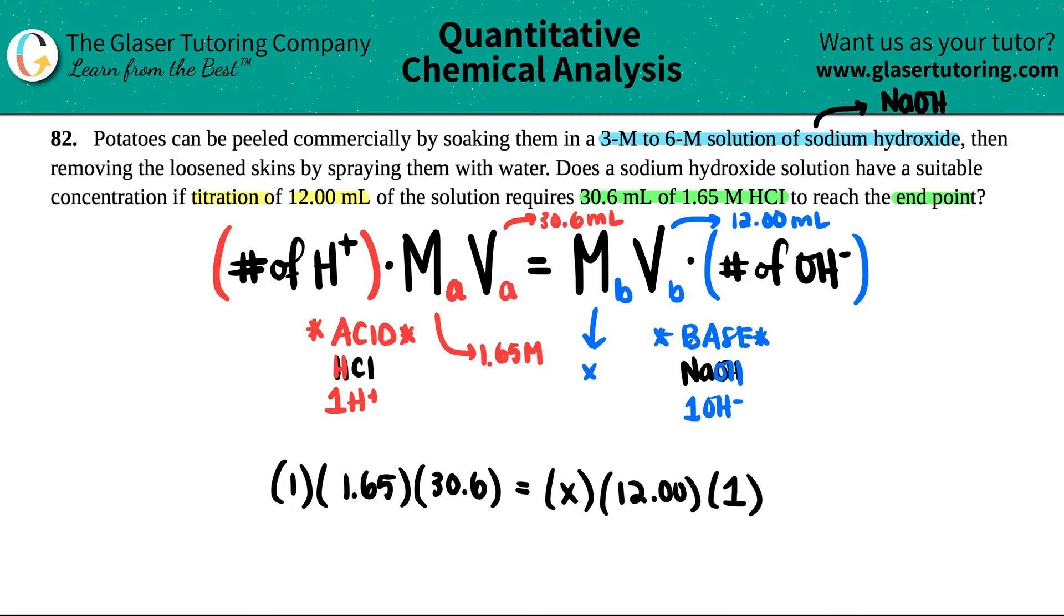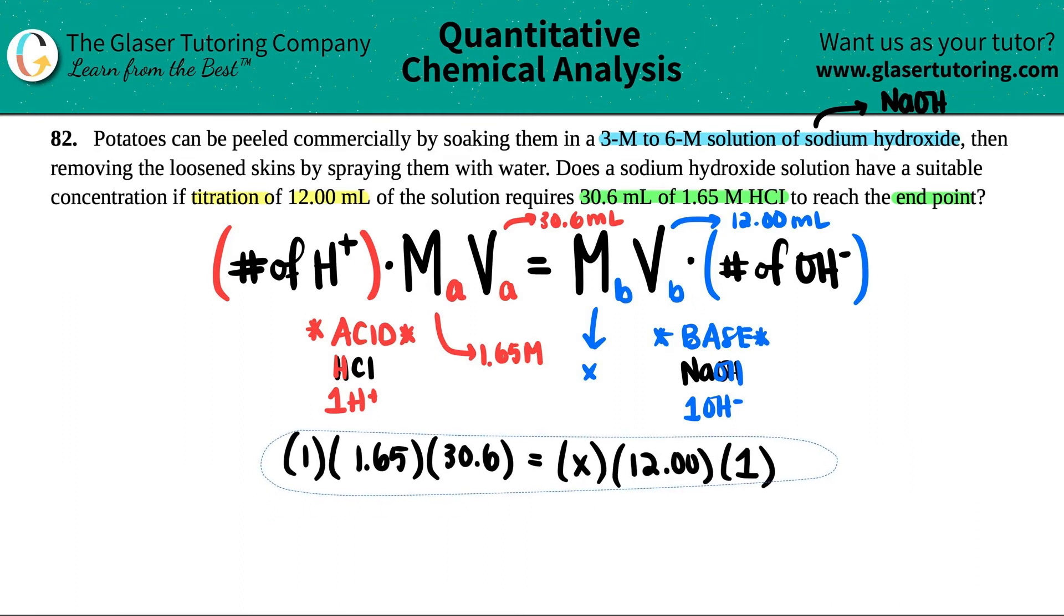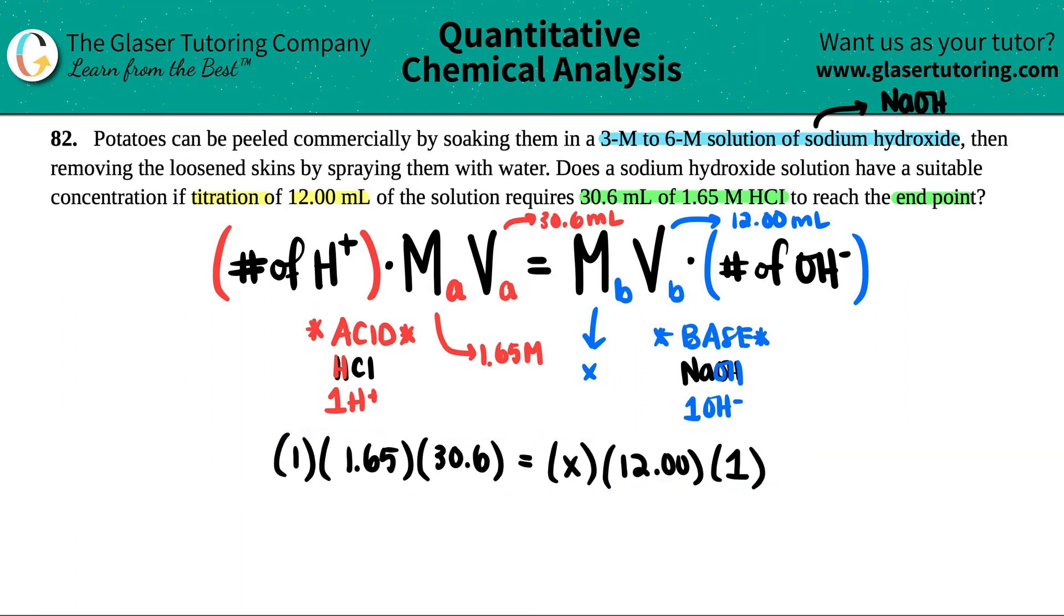Now I love this formula because just like with M1V1 equals M2V2, the volumes just have to match its units. It does not have to be in liters specifically. So I have mL, I just need to use mL on the other side. If I use liters, I just have to use liters on the other side. So I don't have to convert.